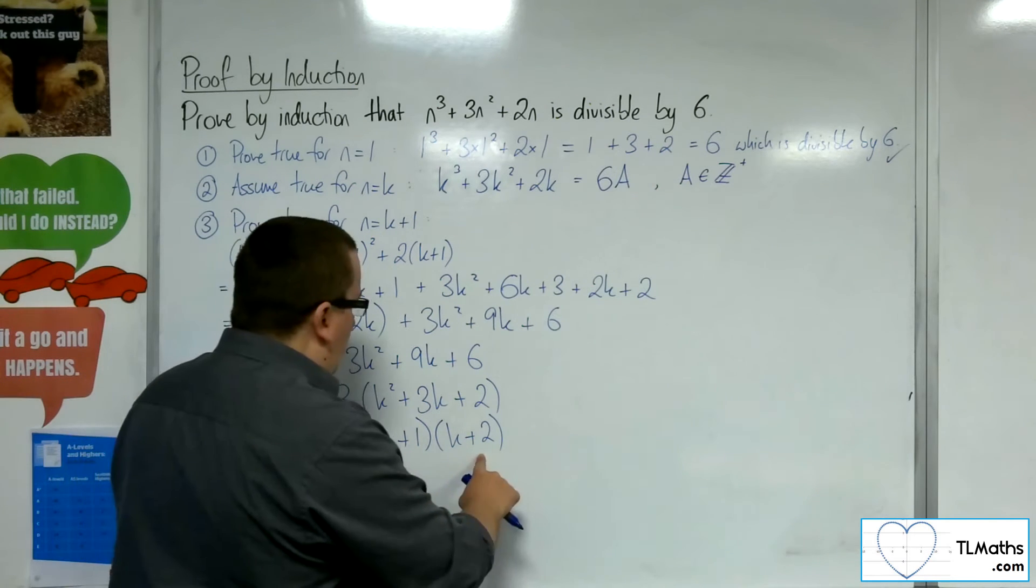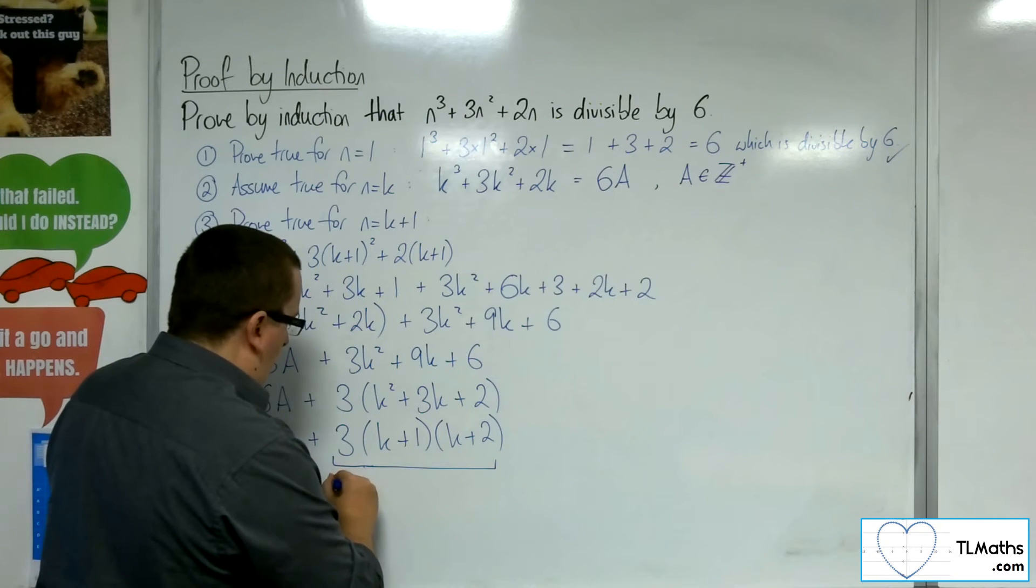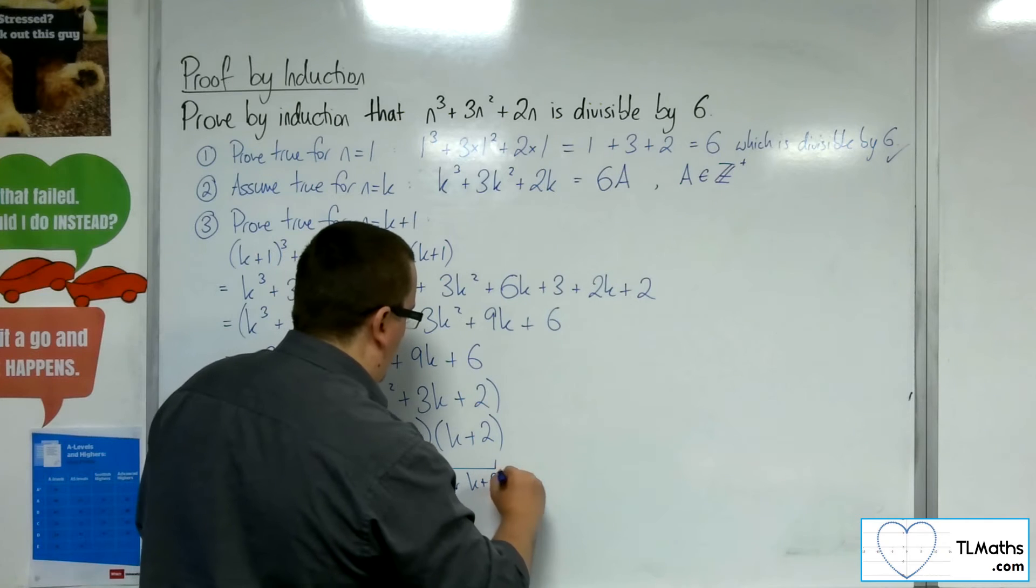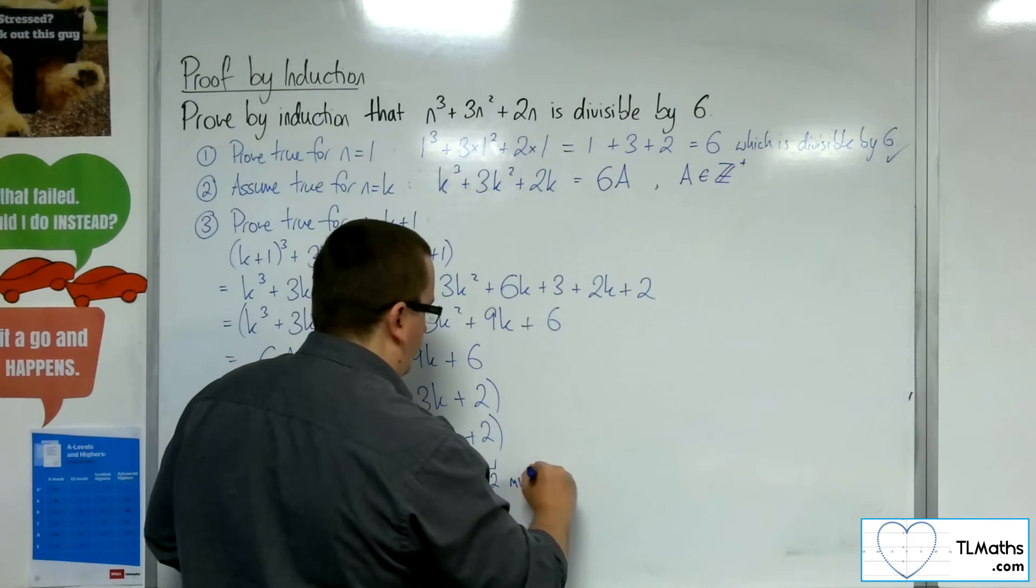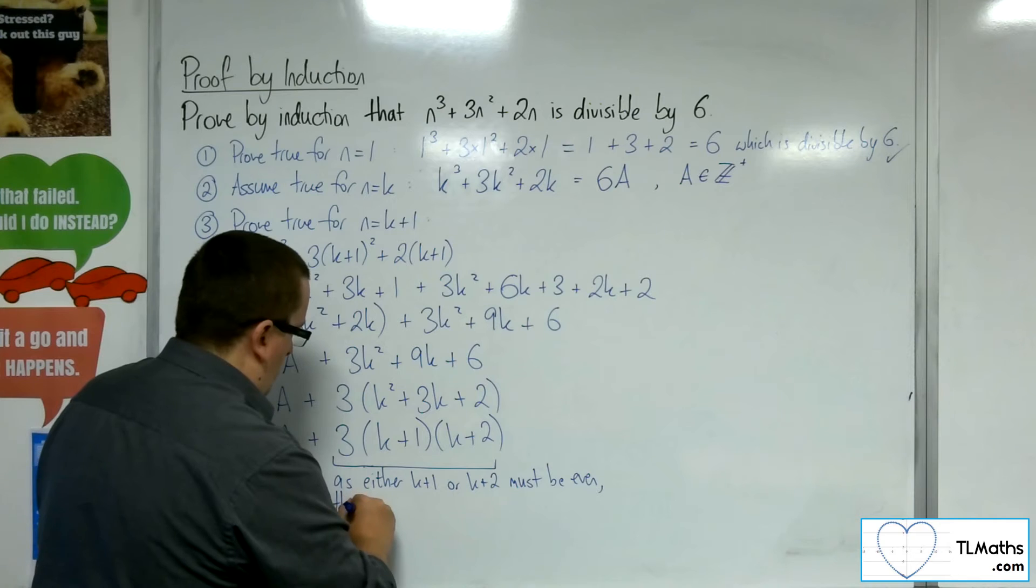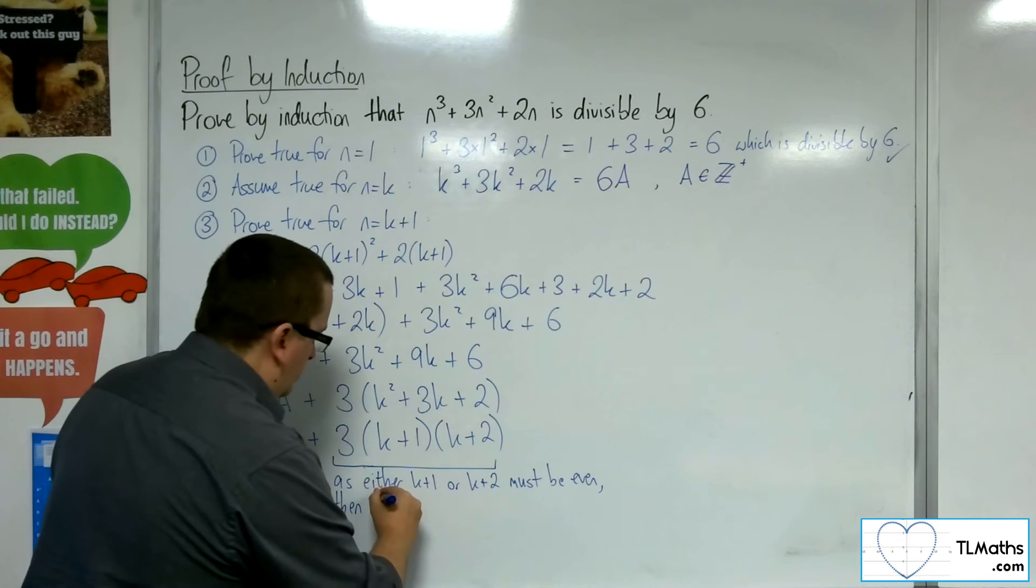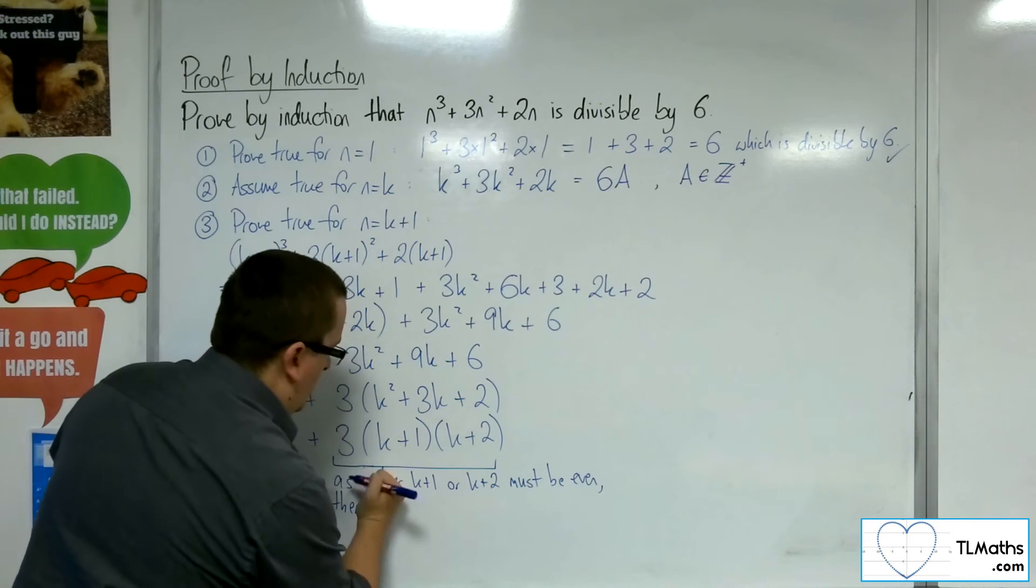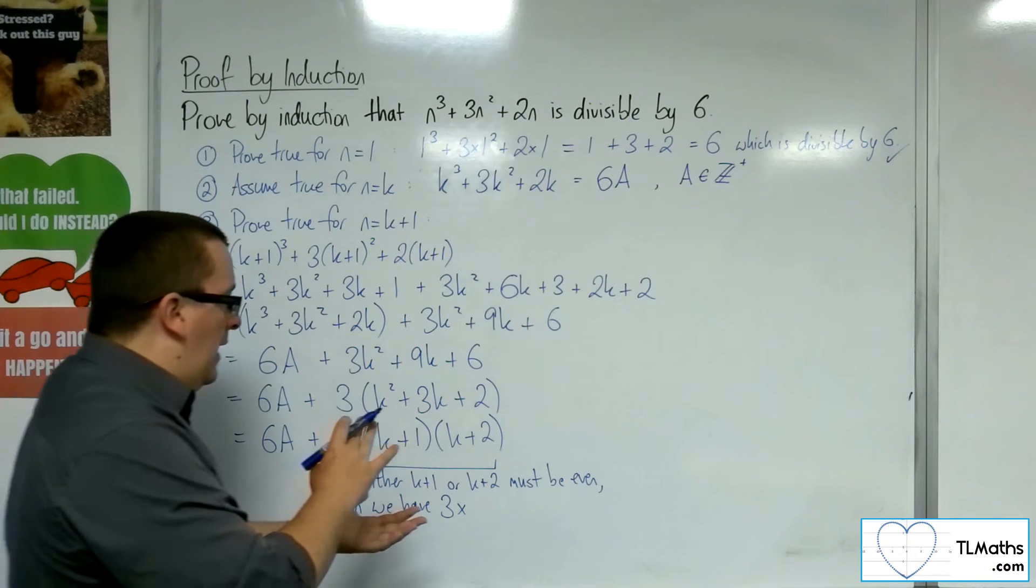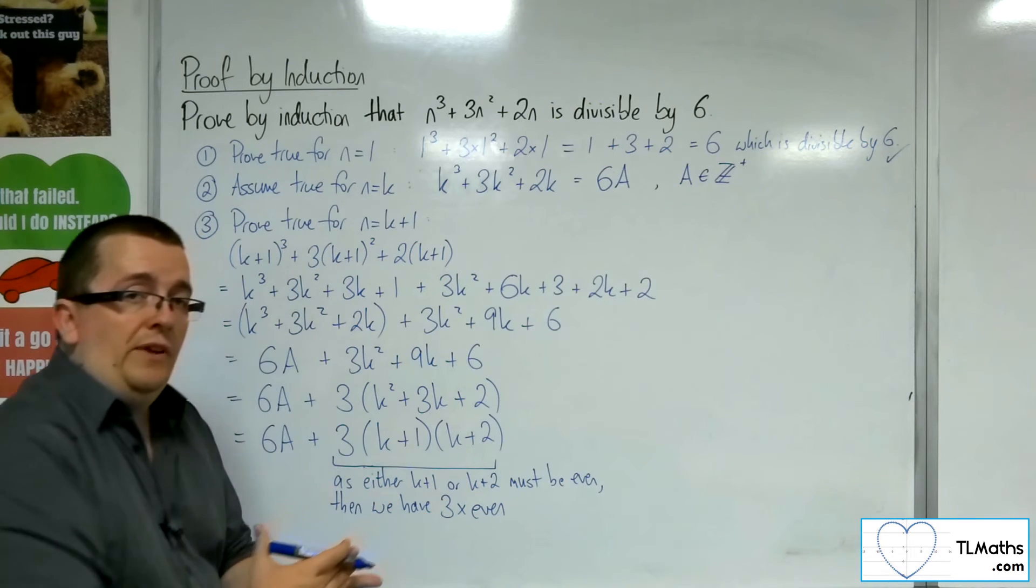So, what we can say here is that as either k plus 1 or k plus 2 must be even, then we have 3 times an even number. Even numbers have factors of 2.